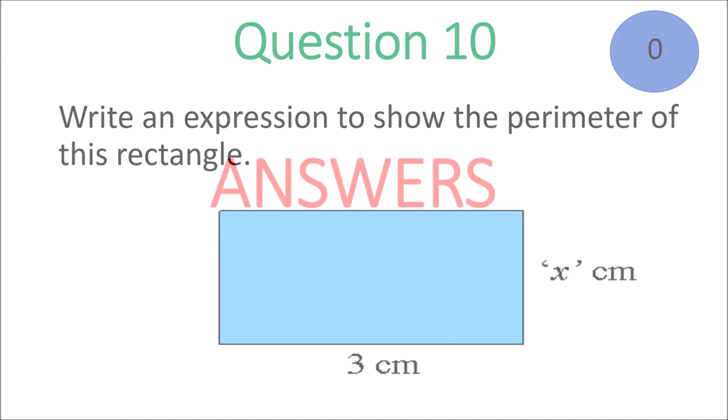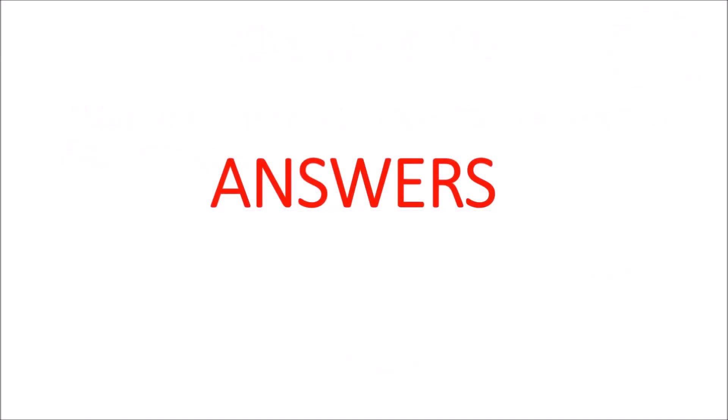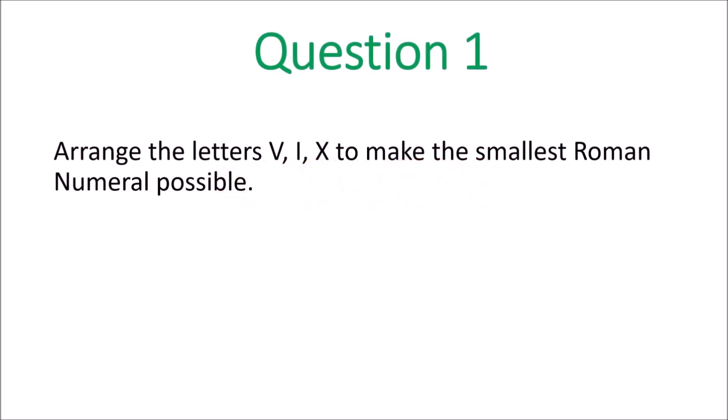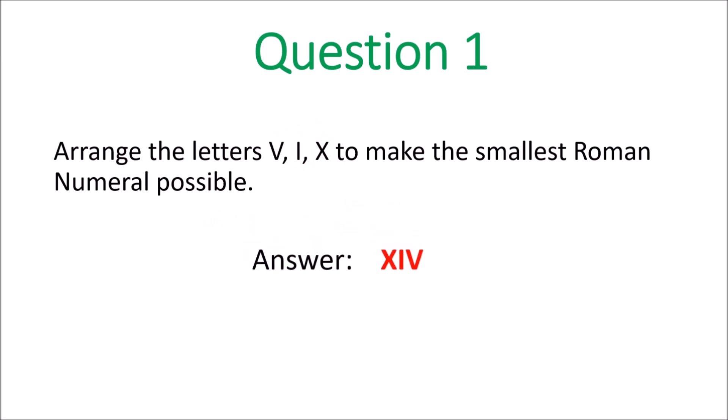That's question 10, and we move to the best part — the answers. Get ready to mark, grade 6. Let's see what you did on this test. Question 1: arrange the letters V, I, X to make the smallest Roman numeral possible. You have to start with X, then I, then V — XIV. Yes, XIV, that's 14.